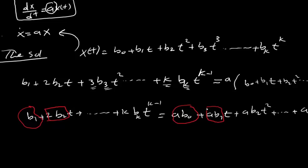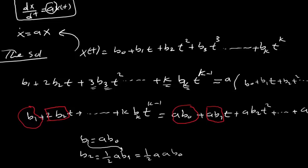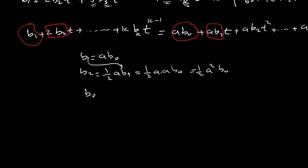So we get: b1 equals a*b0; b2 equals (1/2)*a*b1, and substituting b1 gives b2 equals (1/2)*a²*b0; b3 equals (1/6)*a³*b0; and so on until bk equals (1/k!)*a^k*b0.